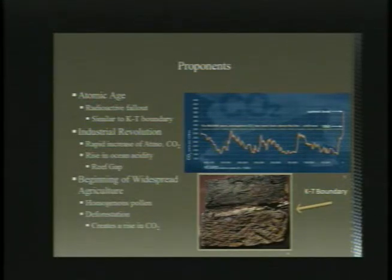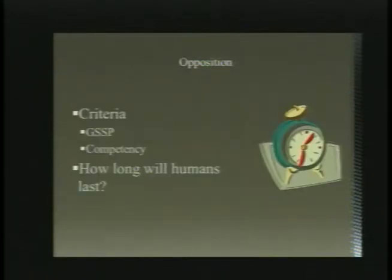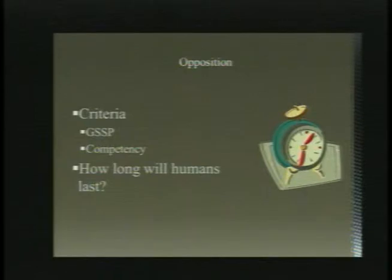Evidence for a new epoch must be global, easily recognizable, and must be preservable in the rock record. Proponents for the Anthropocene believe that humans have made a global impact on the biosphere that will be evident in the rock record for millions of years to come.